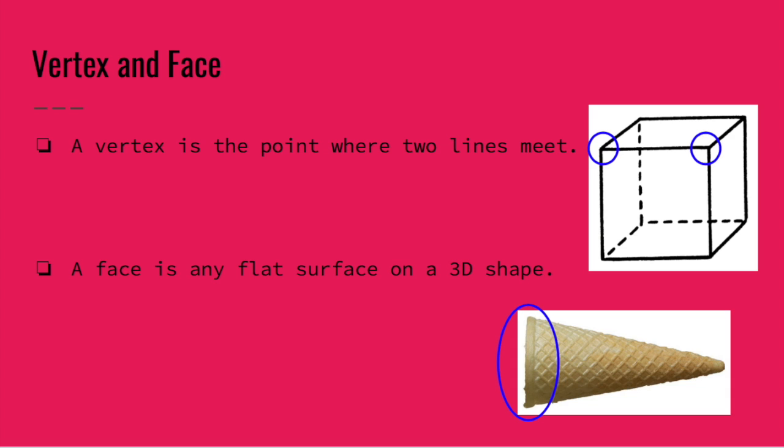Then we also have faces. A face is any flat surface on a 3D shape. So anything that you can rub or touch and it's smooth and flat, that is called a face. You can see in my ice cream cone, I have one face, one flat side on the cone. Now let's go ahead and look at some of our shapes.